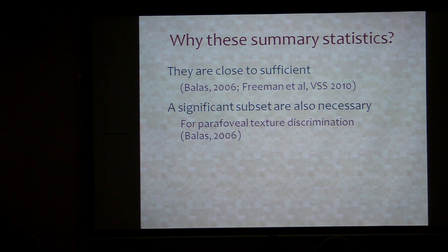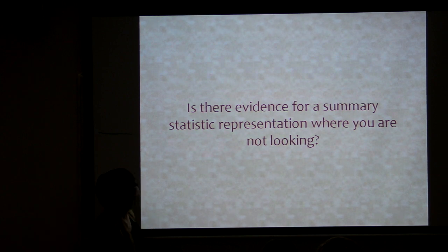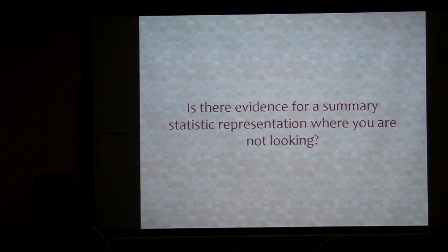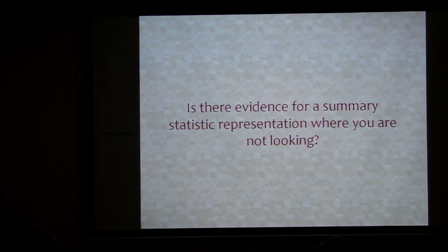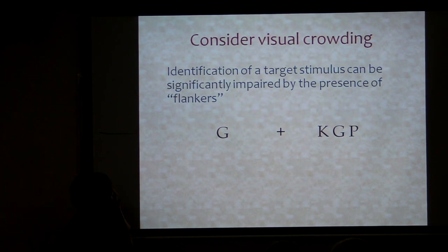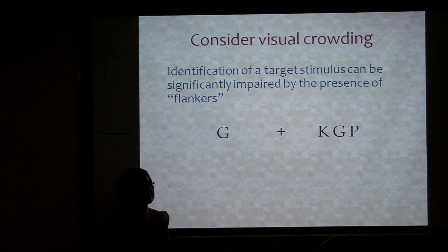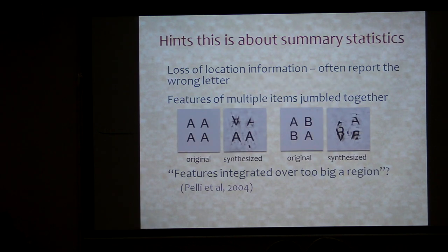That isn't a proof that they're the right statistics, but it is very suggestive that the set is sufficient. Furthermore, my colleague Ben Ballas has suggested that a significant subset of these are almost certainly necessary — if you remove them, people very quickly notice that something's missing. We can talk more about how one tests what statistics after the talk, but that's my argument for now about why this is a good guess.